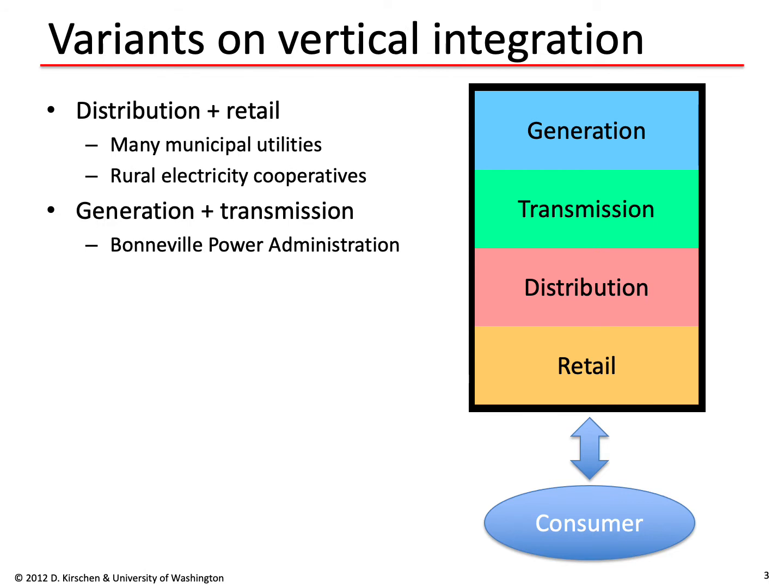There are some possible variants in this model. For example, distribution and retail are often separated from generation and transmission. Many municipal utilities or rural electricity cooperatives will handle distribution and retail and will buy their power from other organizations, such as the Bonneville Power Administration, which takes care of generation and transmission.